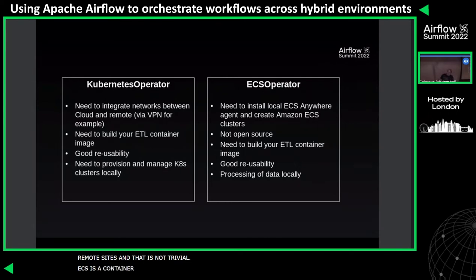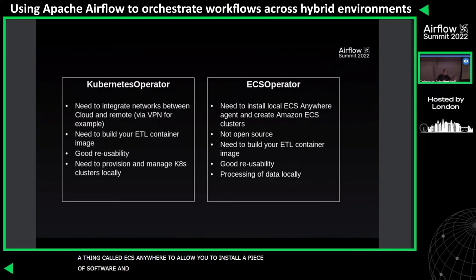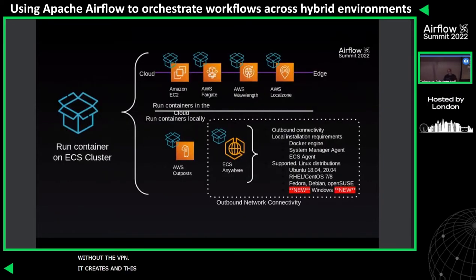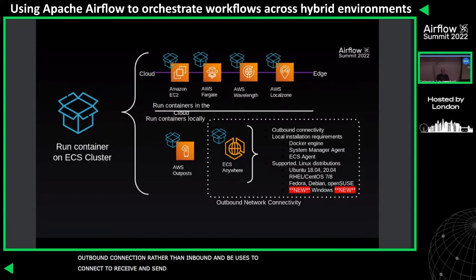We also have the ECS operator. ECS is AWS's container orchestration system that allows you to easily run containers in the cloud. Last year we launched ECS Anywhere, which allows you to install a piece of software and run a container very easily without having to set up a VPN. It installs some software - some of it open source - and creates an outbound connection to the ECS control plane, which it uses to receive and send data.